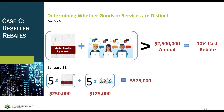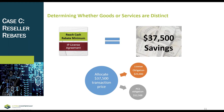On January 31st, Customer A places an order to purchase five licenses of Product A and an annual PCS contract for those five licenses. The license total is $250,000 and the five PCS purchases total $125,000, so the total order amounts to $375,000. Management has concluded the order meets the definition of a contract (step one), and that the license of Product A and the annual PCS contract are separate performance obligations. The question is: how will this rebate impact the transaction price?